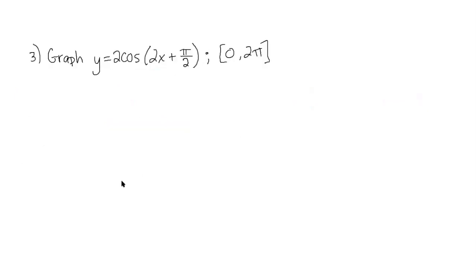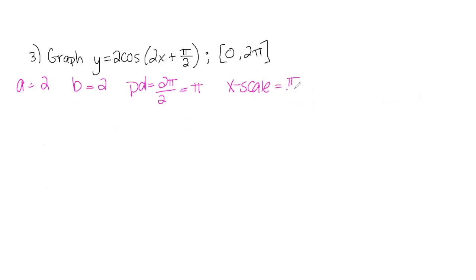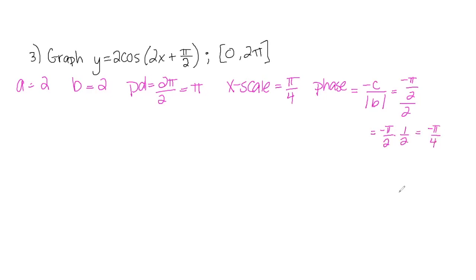For the next example I pull out the same information. Amplitude a is two, frequency b is two. Period is two pi over b, so two pi over two is pi. X-scale is the period over four, so pi over four. There's no vertical shift here — I have a phase shift. The phase shift is negative c over the absolute value of b. Negative c here is negative pi over two and b is two, so that's negative pi over two times one half, which gives negative pi over four. This tells me to take the cosine curve with amplitude two and frequency two, then move every point left pi over four units.